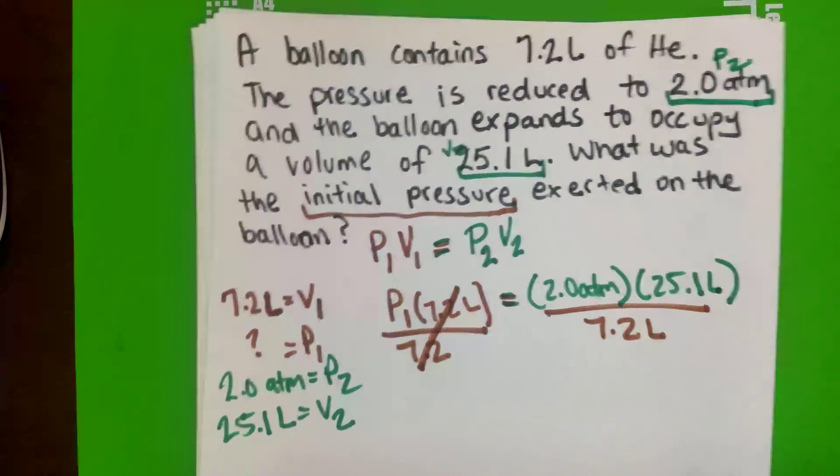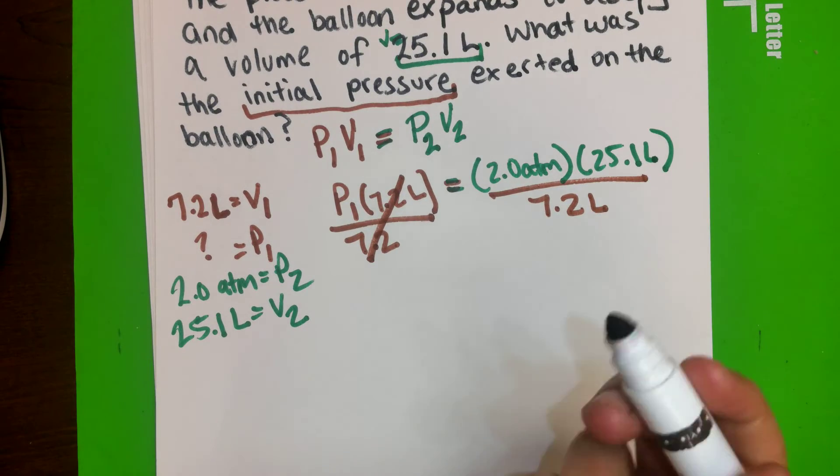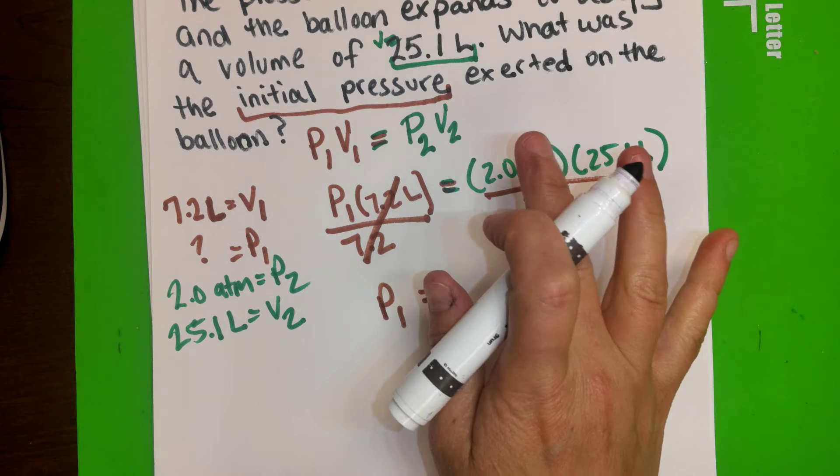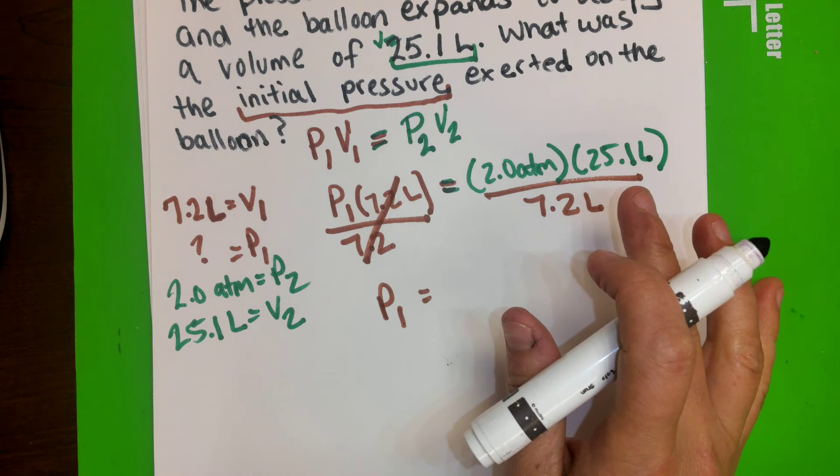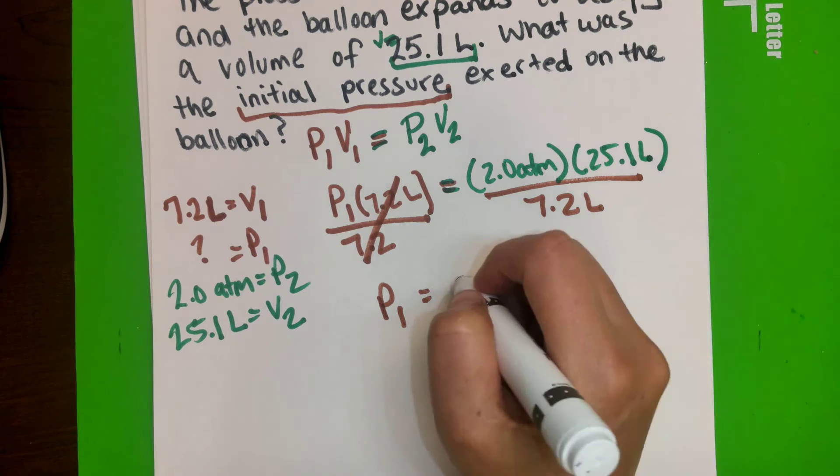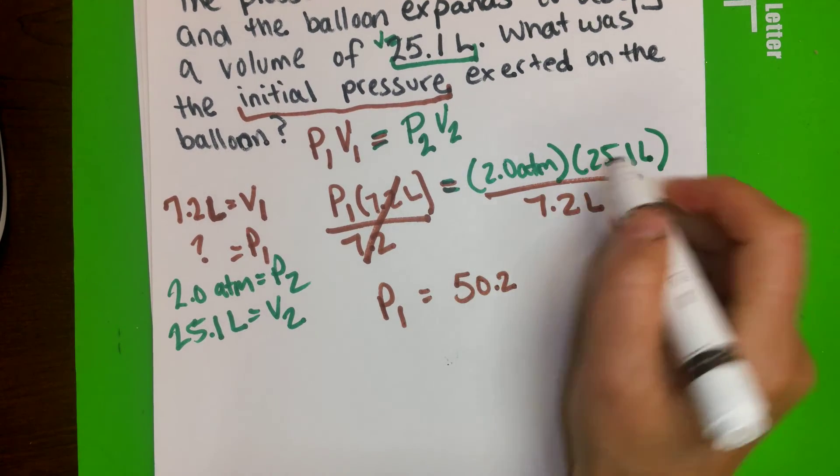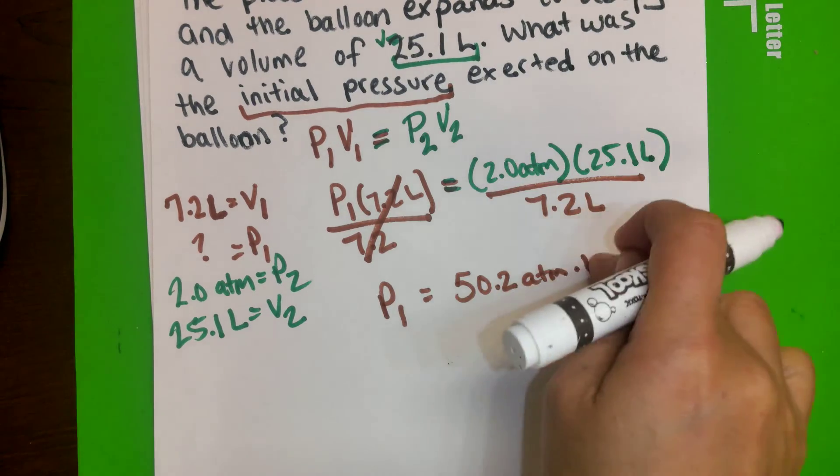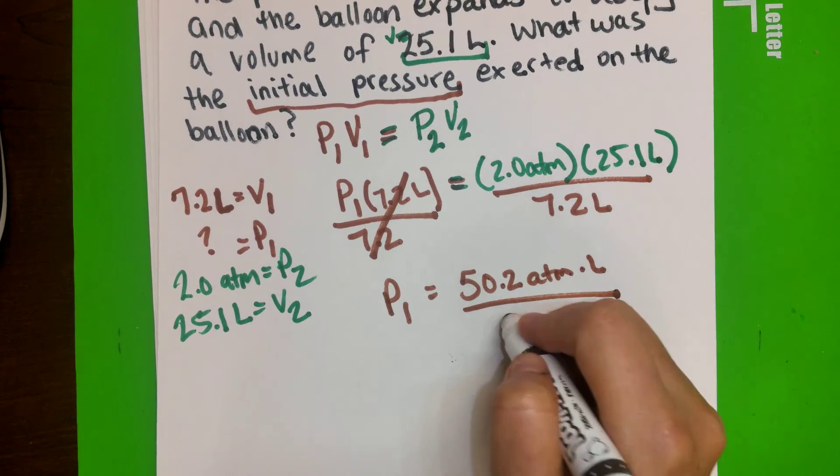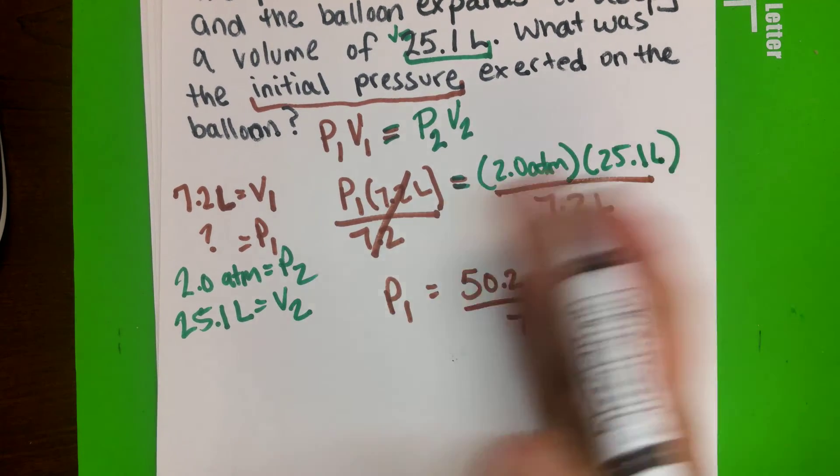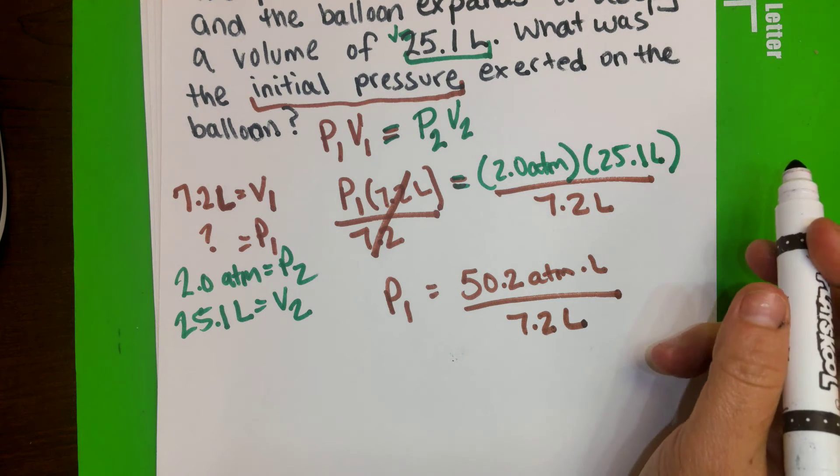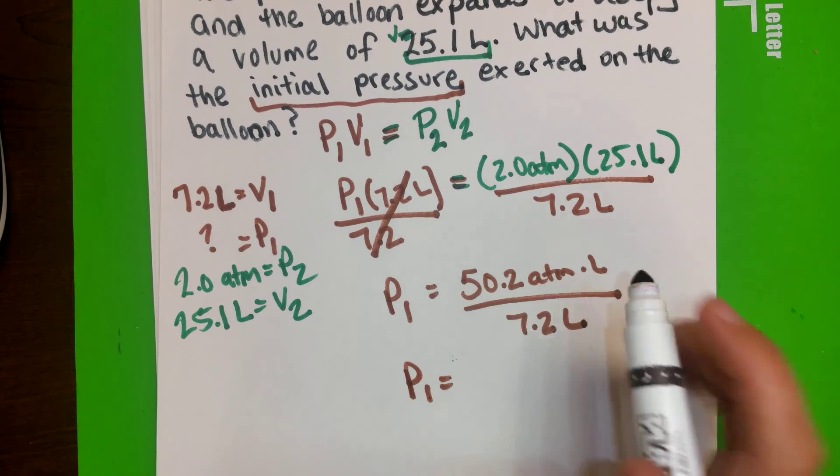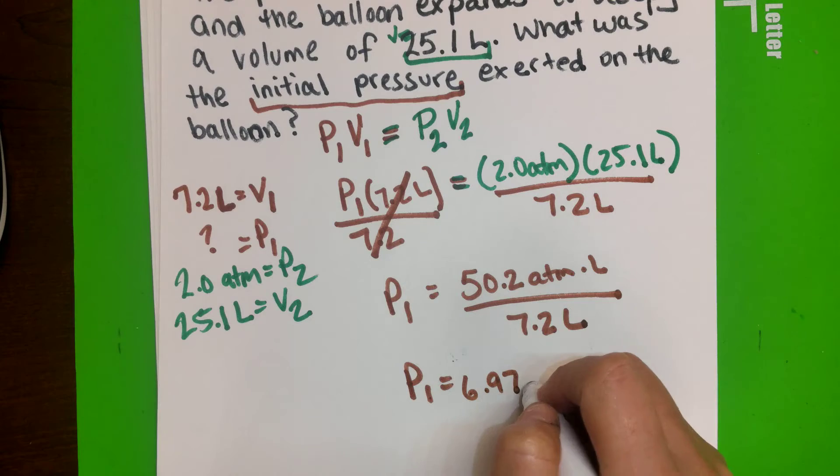So it will be P1, and 25.1 times 2.0, that would be 50.2, and then as we multiply, we put those units together, and then you divide it by 7.2 liters. At this moment, I don't really care about the colors. So P1 equals, once we divide it, it will actually give you 6.97 ATM.